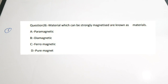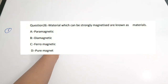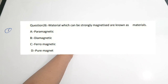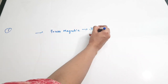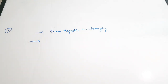The first question is: materials which can be strongly magnetized are known as dash materials. There are various types of magnetic materials based on their magnetization or magnetizing power. The options are: A) paramagnetic, B) diamagnetic, C) ferromagnetic, D) pure magnet. The correct answer is ferromagnetic — a material which can be strongly magnetized is called ferromagnetic.